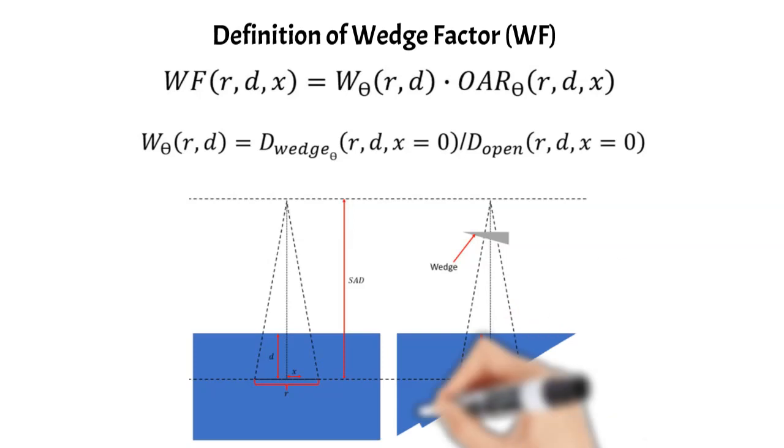This diagram illustrates the concept I mentioned previously. On the left we have the situation without the wedge, and on the right we have the situation with the wedge. We just take the ratio of the doses measured in these two situations.